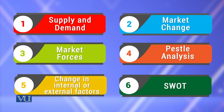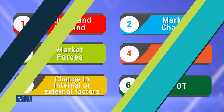Where SWOT — strength, weakness, opportunity, threat — analysis is associated, that situation moves into uncertainty. So they are interchangeable theories — this is how we understand the theories of risk.